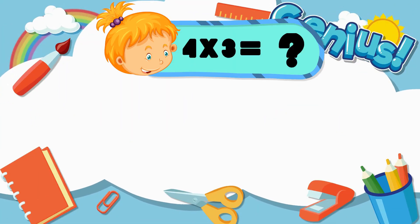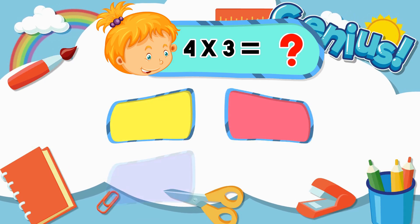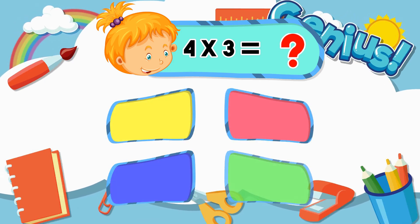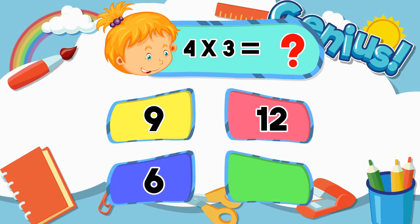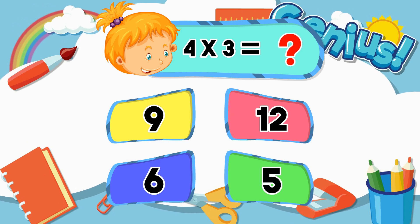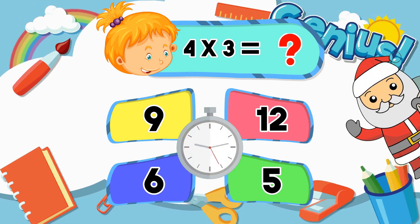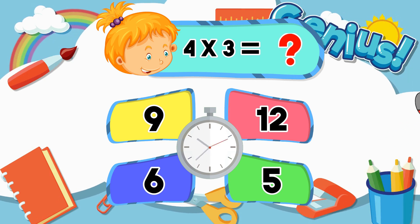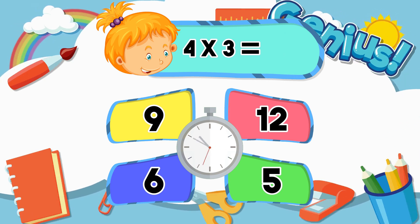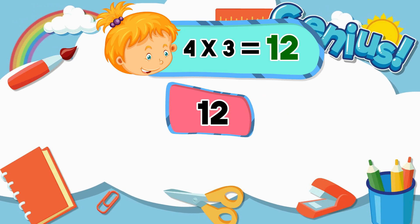What is 4 times 3? Options: 9, 12, 6, 5. Answer: 12.